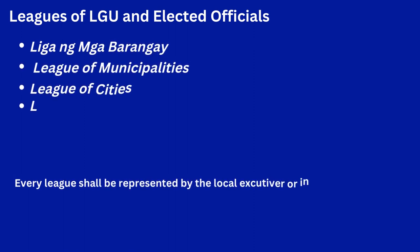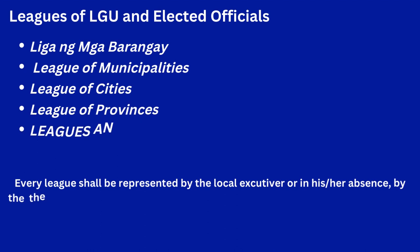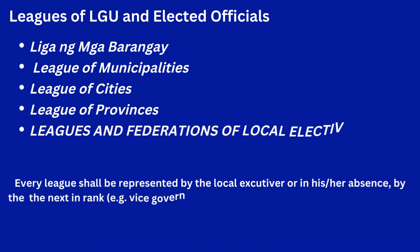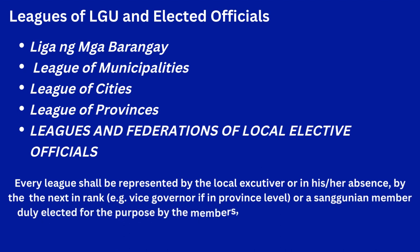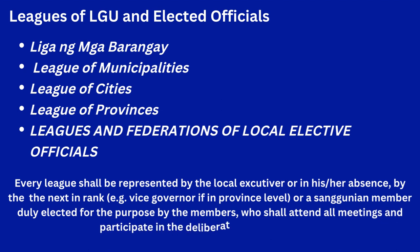The leagues of local government units and elected officials include the League of Municipalities, League of Cities, League of Provinces, and Leagues and Federations of Local Elected Officials. Every league shall be represented by the local executive, or in his absence by the next in rank — for example, the vice governor at the province level, or a Sanggunian member duly elected for the purpose — who shall attend all meetings and participate in the deliberations of the league.